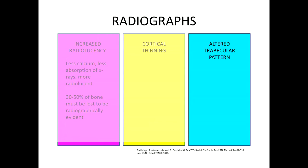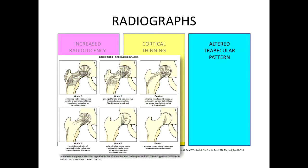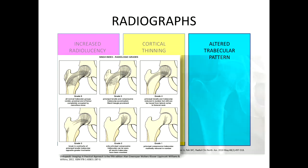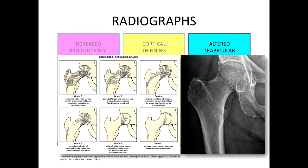Changes in trabecular pattern have also been studied. One of the places where altered trabecular pattern can be seen is in the proximal femur, where progressive loss of bone mineral density results in a predictable loss of tensile and compressive trabeculae — this is called the SINGH index. However, the trabecular pattern in the proximal femur isn't always well seen, even when normal, and it has been shown that this does not correlate with measured bone mineral density.